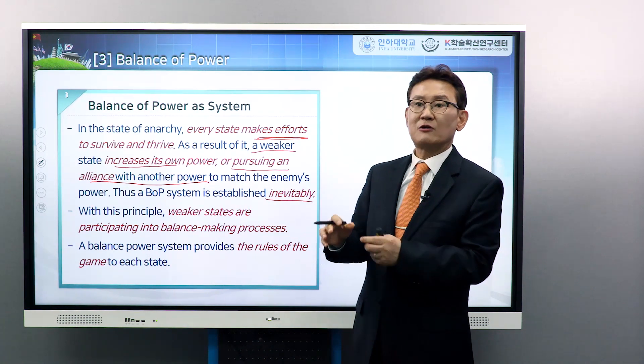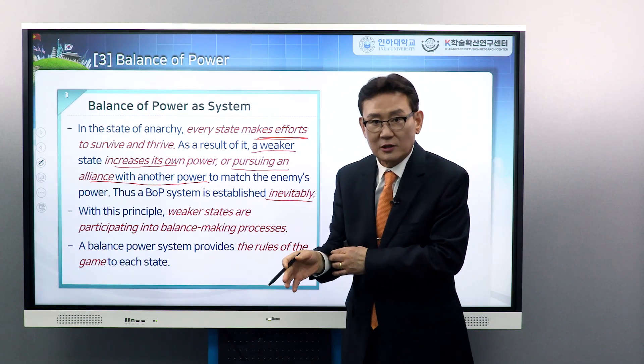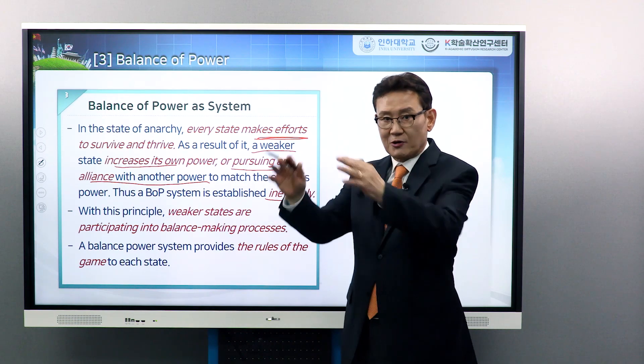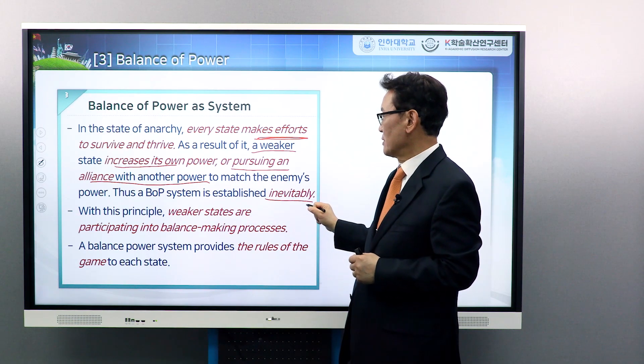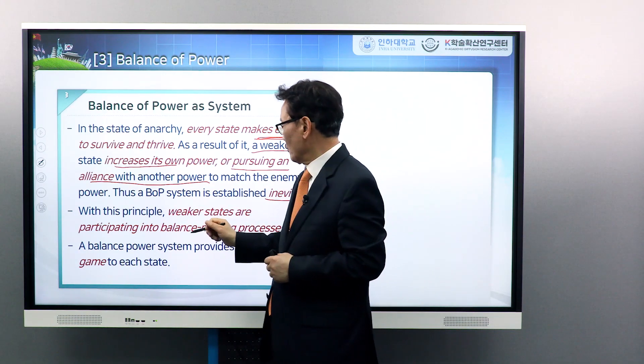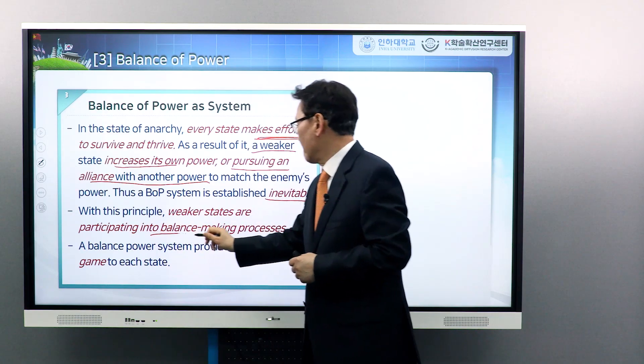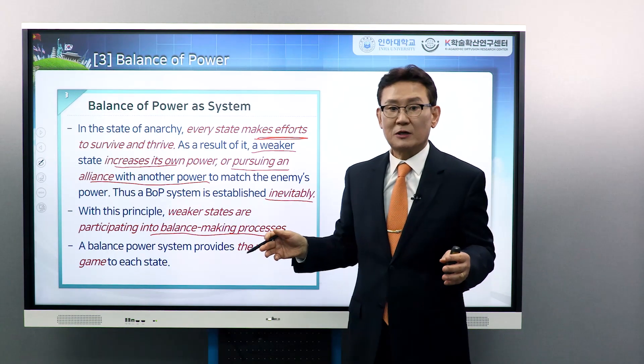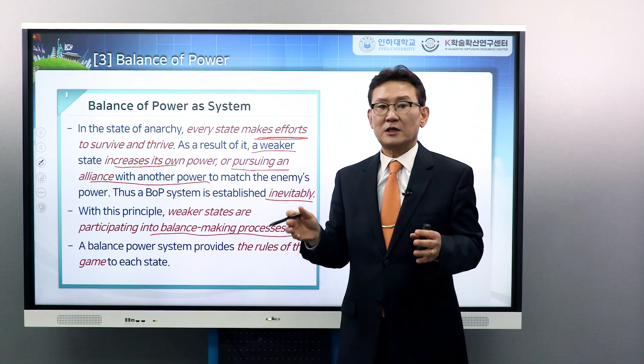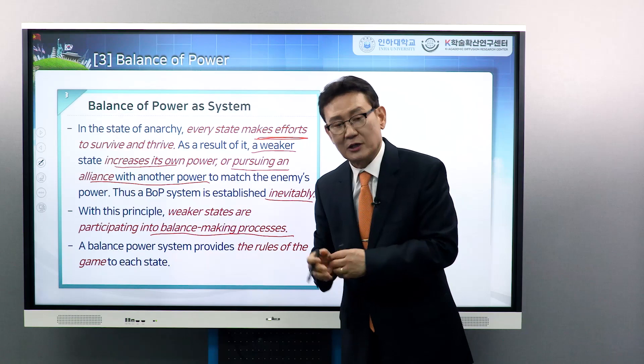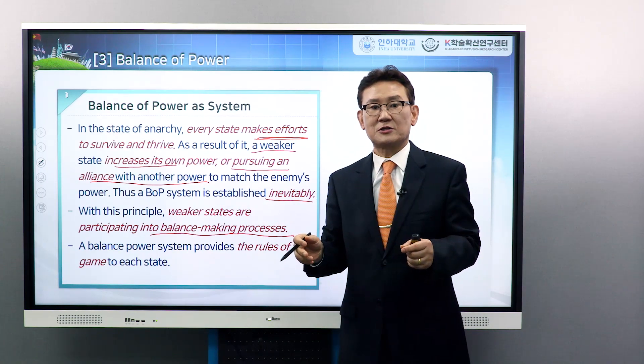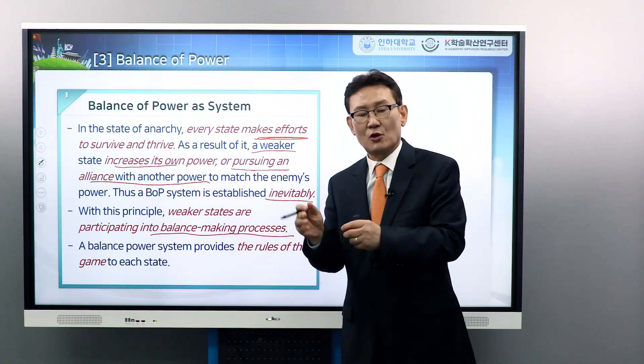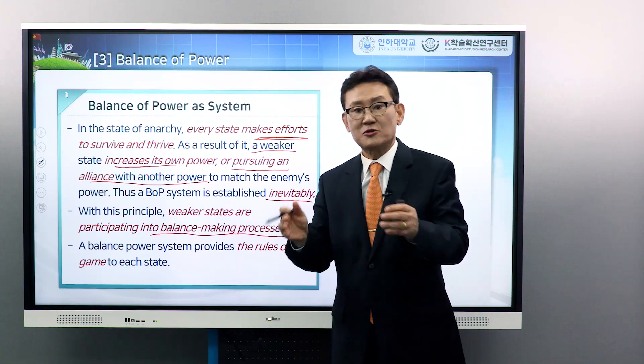It's a final resort for the weaker countries in the power pyramid of world politics. With this principle, weaker states are participating in balance-making processes all the time. Because weaker countries cannot afford increasing defense expenditure or increasing powers, weaker states must participate in balance-making processes. That's a balance of power system.